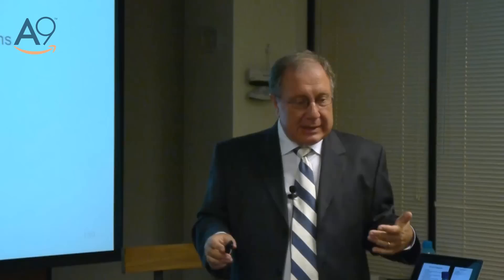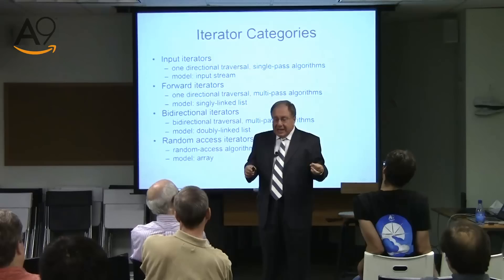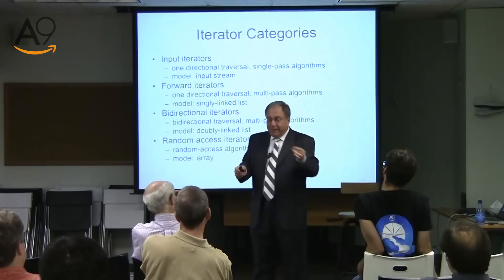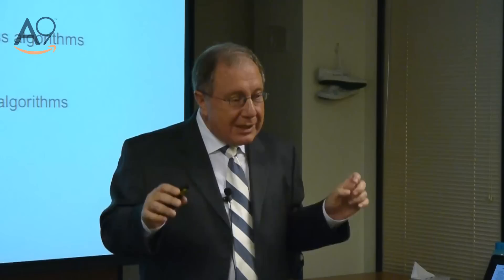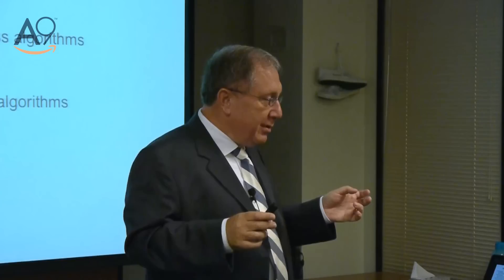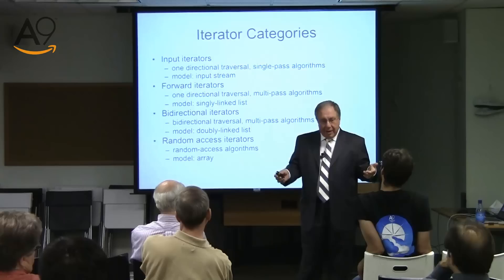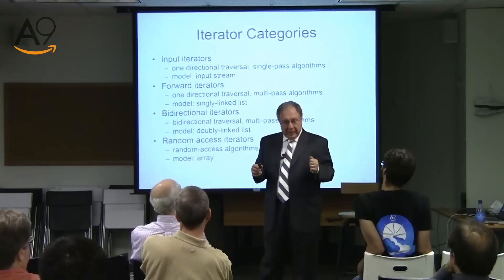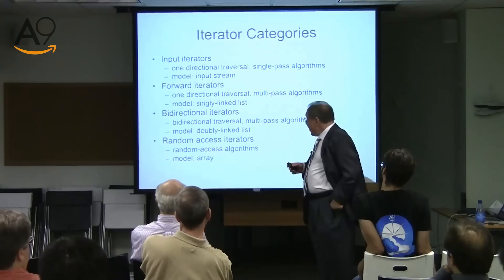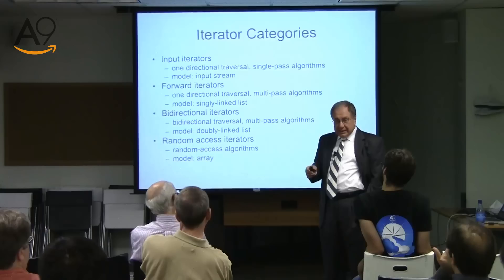And then finally, random access. The idea is that you could suddenly jump — and not just jump far, but jump fast. Doing three steps in some sense takes as much time as doing one step. But many algorithms which could be done in this framework cannot normally be done with forward and bidirectional iterators.